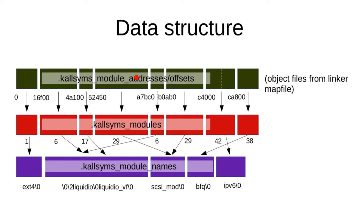This is created at link time from scripts/kallsyms and a linker map. The linker emits things in order, though we need to do a little extra sorting when optimizing module name lists — but the performance overhead was literally invisible to me. It's created at link time: the linker spits out a link map, and it's the same kallsyms pass as usual.